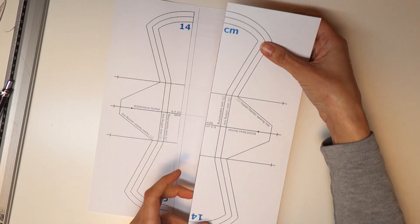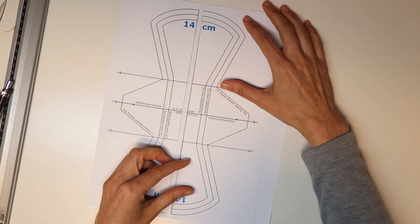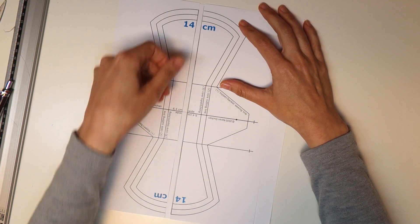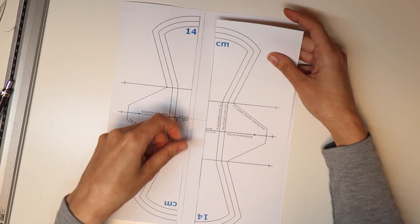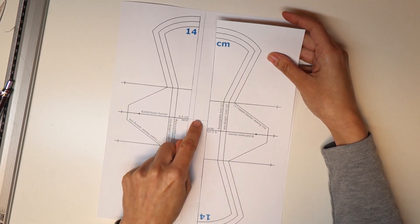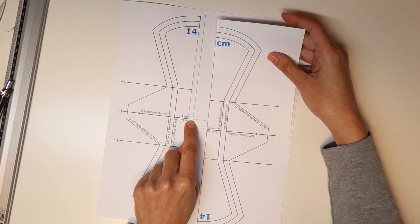And I'm going to take this other half of the pattern and tape it, so that the length is along the line that I drew. And this line is matching up with this line that I drew here.